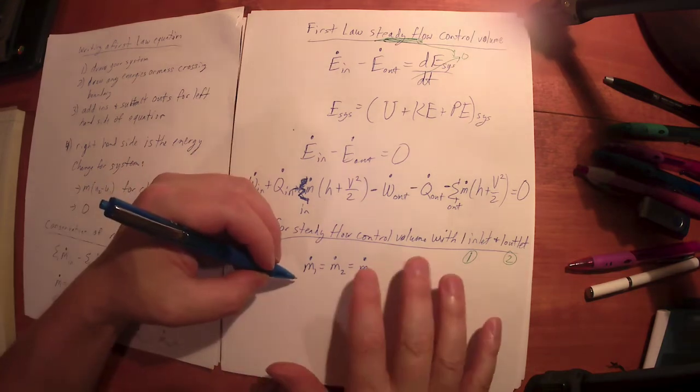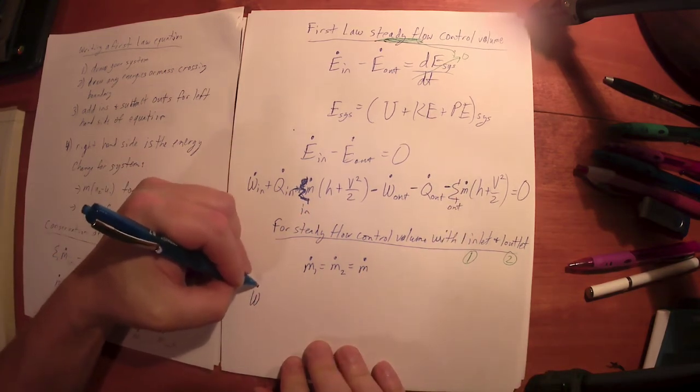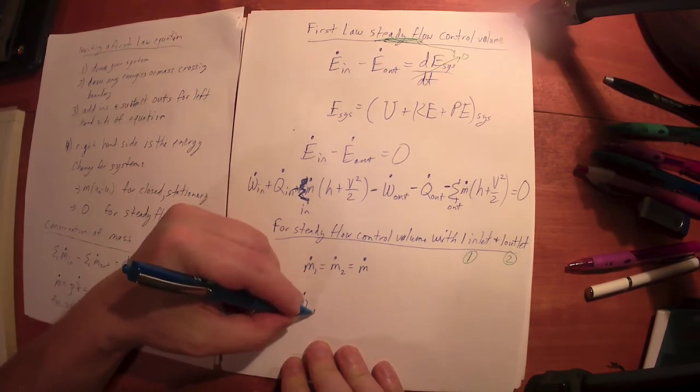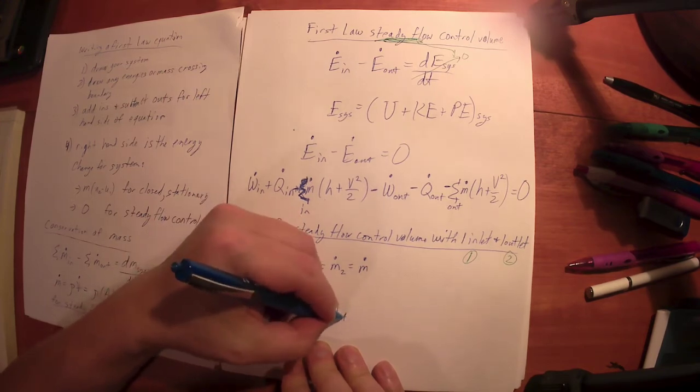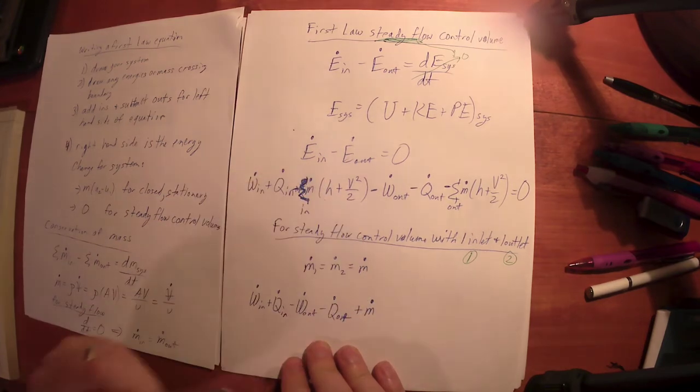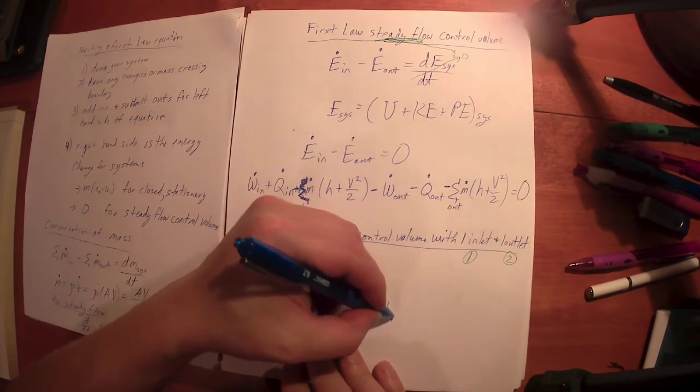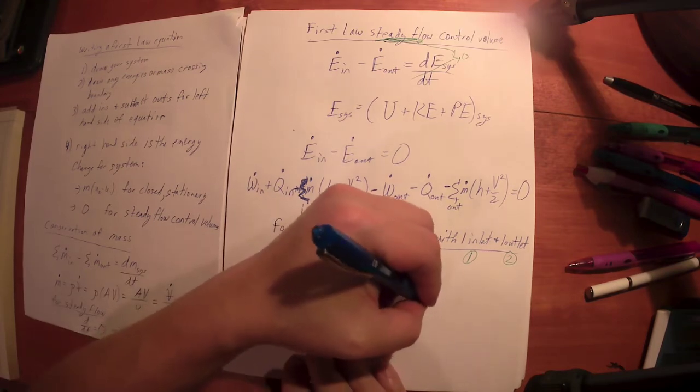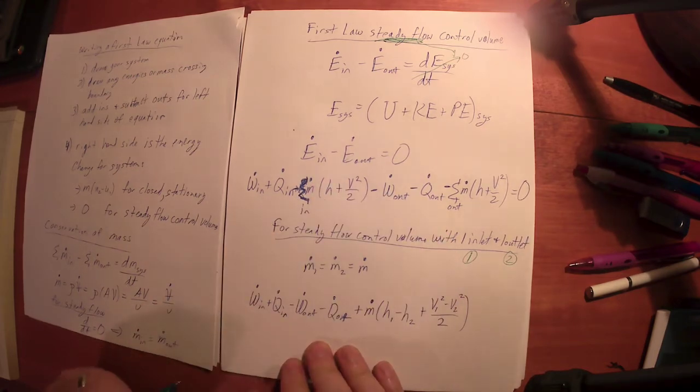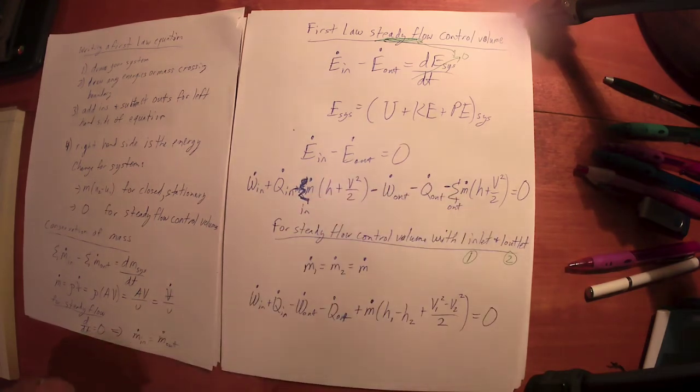If it's just a single inlet and a single outlet, it's the same m dot between them, so we're just going to factor it out of the whole thing. That just becomes this: the power input plus the heat rate in minus the power output minus the heat rate out - these are all rates, they all have dots - plus the difference between the rate of the energy of the mass in minus the rate of the energy of the mass out. That is simplified based on an enthalpy change, and it's not uncommon that we'll have a kinetic energy change. This is in minus out.